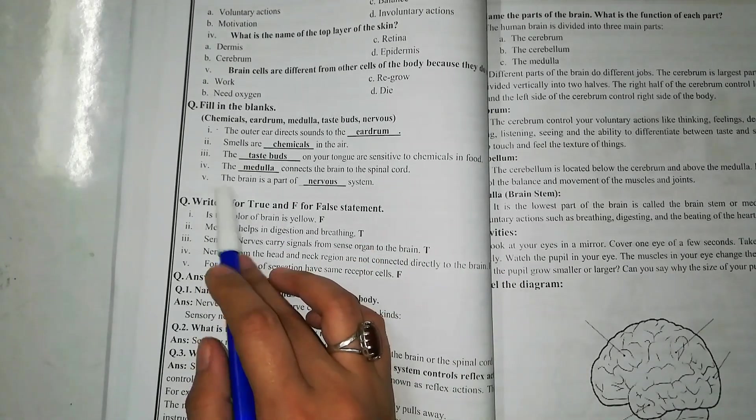Last one is: the brain is a part of nervous system.